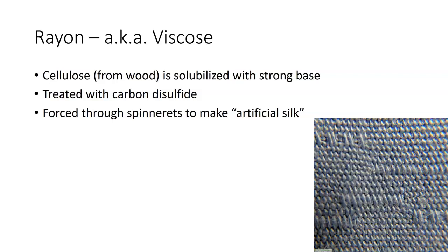This artificial silk is spun into thread, and the thread is used to produce cloth. This is actually a close-up of cloth made from rayon. You can see how it's kind of shiny — it looks kind of like silk, but it is not silk because it's actually made out of cellulose that you might get out of a tree.